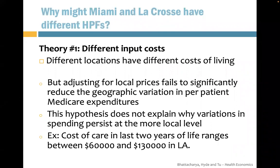What might explain why Miami and La Crosse have different health production functions? There are five theories. Theory one is different input costs — different locations have different costs of living. It's more expensive to hire nurses and doctors and to pay rent for medical centers in some areas. However, even after adjusting for local prices, this still fails to significantly reduce the geographic variation in per-patient Medicare expenditures.